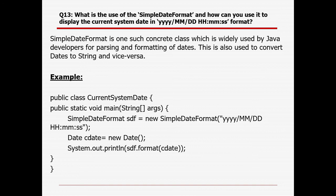What is the use of SimpleDateFormat and how can we use it to display the current system date in any format? SimpleDateFormat is a concrete class widely used by Java developers for parsing and formatting dates. It is also used to convert a date to a string and vice versa. We create an object using the new keyword and provide the required format, then use the Date class to get the current date and print it in the specified format.